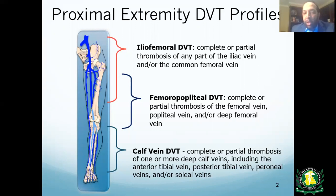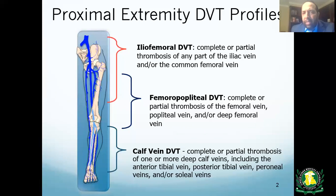Below the knee, the popliteal vein branches into the calf veins, which include the anterior tibial vein, posterior tibial vein, peroneal veins, soleal vein, and gastrocnemius vein. A clot in any of these is called a calf vein DVT. The treatment algorithm for calf vein DVT differs from the other two, and understanding the anatomy is key to understanding these treatments.